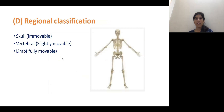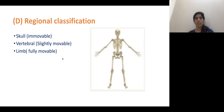The regional classification includes the skull as an immovable joint, vertebrae as a slightly movable joint, and the limbs as fully movable joints. For further detail, you can refer to BD Chaurasia's book as well as Joint Structure and Function by Cynthia Norkin. Thank you.